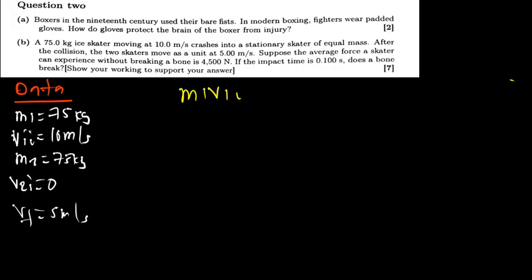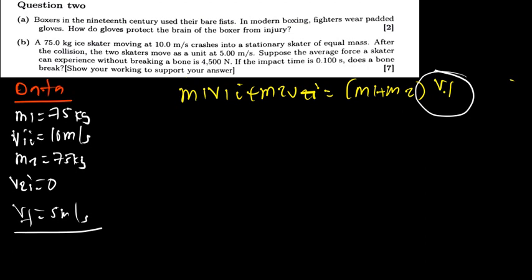It is M1 V1 initial plus M2 V2 initial being equal to, we add the mass because they are going to be moving together times that. So now we are not going to use this formula because we have been told that the velocity, the final velocity is 5 meters per second. Now I want us to find the force and we know that the force can only be found using momentum, using impulse. So impulse is equal to the change in momentum. We know this formula. And impulse, I gave you from part A, it is force times the change in time.